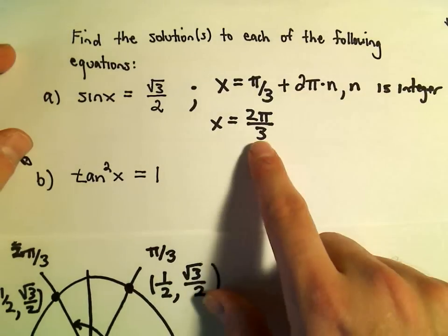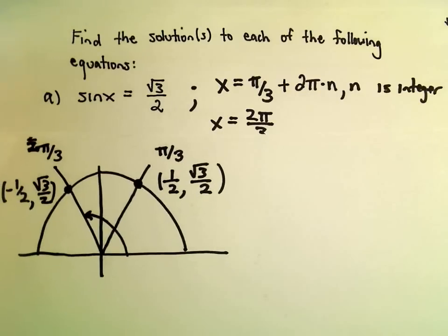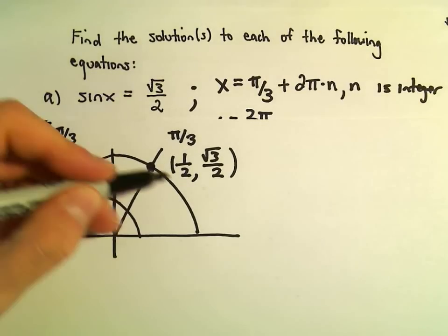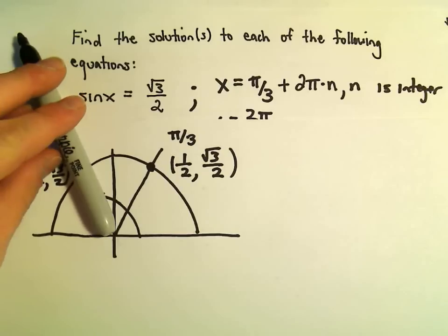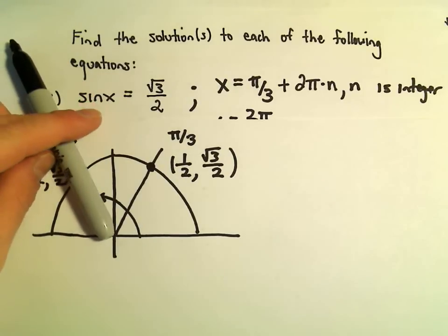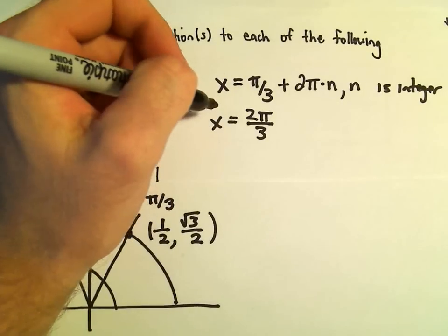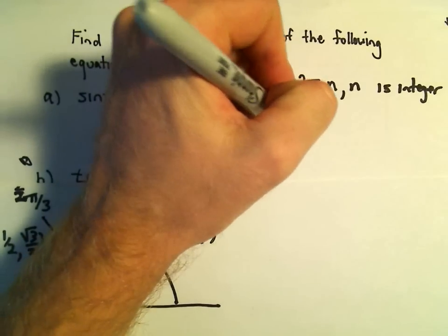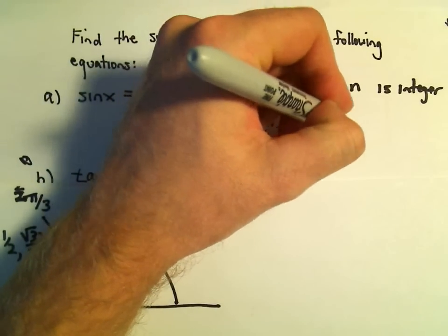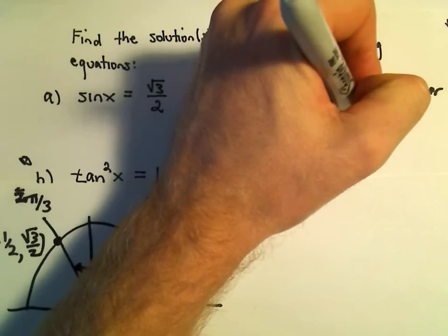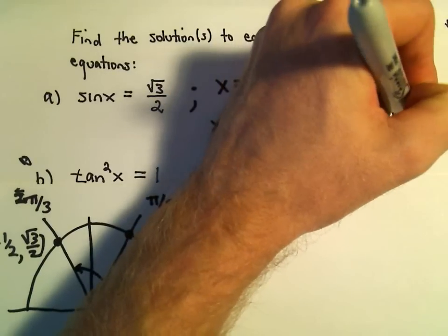And we'll have to do the same thing for our other solution, 2 pi over 3, because if you add or subtract multiples of 2 pi, it's going to put you back at that same equivalent angle. So the other solutions would simply be x equals 2 pi over 3 plus 2 pi times n. Again, n is an integer.